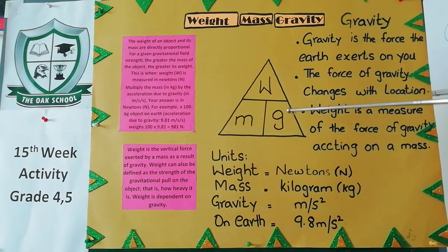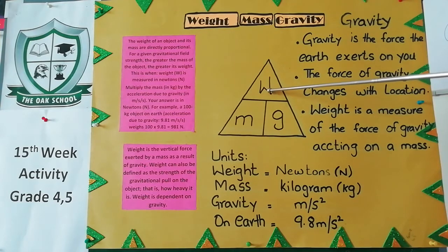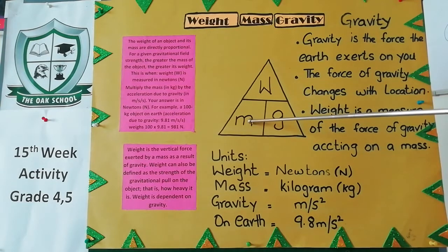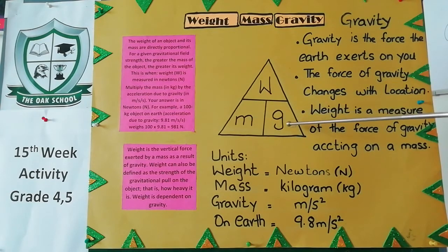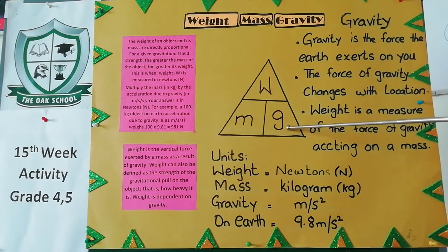Here you have a triangle showing the formula for weight. Weight equals mass multiplied by gravity. Mass symbol is m, gravity symbol is g. So weight equals m times g.